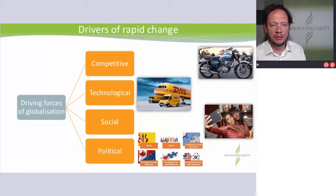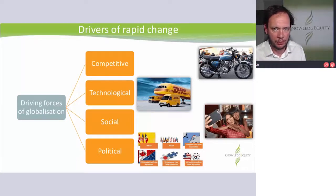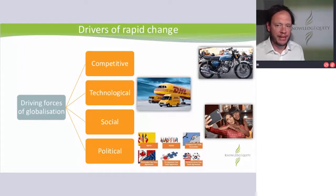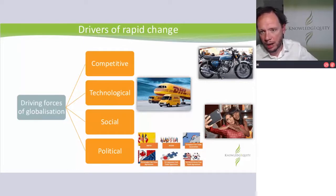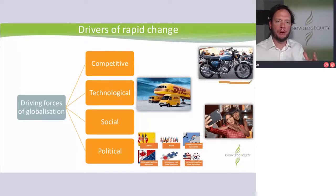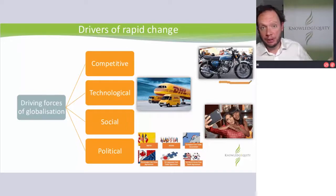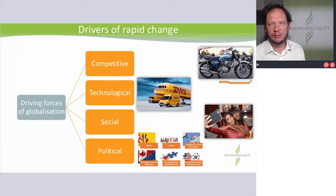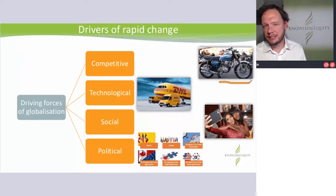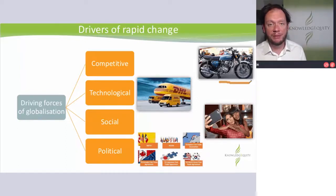The study guide mentions something about the drivers for this rapid change, this idea of globalization. Competitive drivers — my example there is Honda. Because when you open up markets, you obviously allow competitors to come in. When the US opened up the motorbike market around the end of the 1960s and into the 70s, more Japanese manufacturers came in. At first, everyone said they would fail, and they didn't.